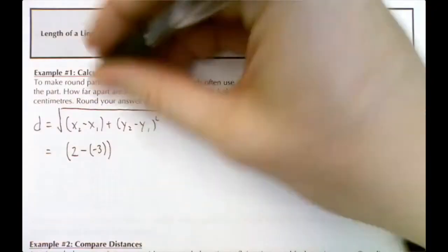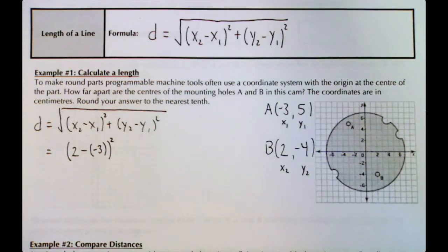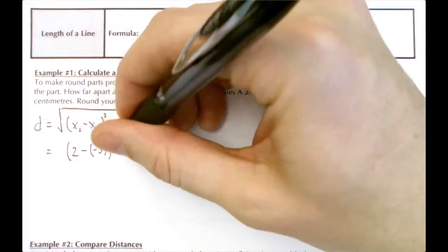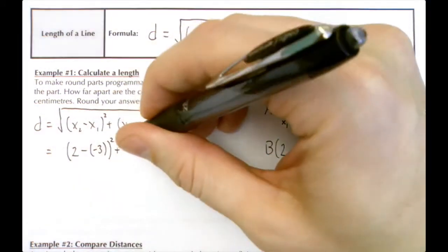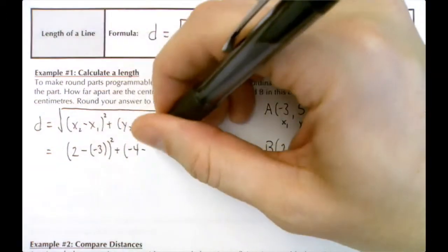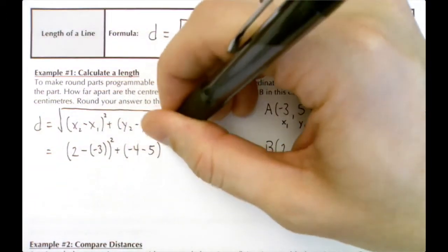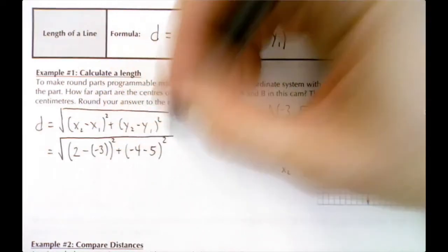So in our first bracket it would be (2 - (-3))². We're going to add the y₂ minus y₁. y₂ is -4, we're going to subtract 5, we're going to square that answer, and the whole thing at the end is square root.